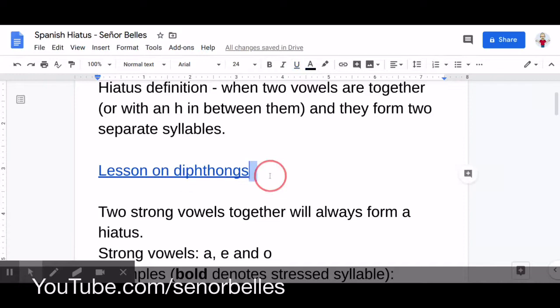So let's take a look here. Two strong vowels together will always form a hiatus. So strong vowels, what's that? Well, the vowels A, E, and O are considered strong vowels in Spanish. So if you have two of those together, they're going to be on separate syllables.